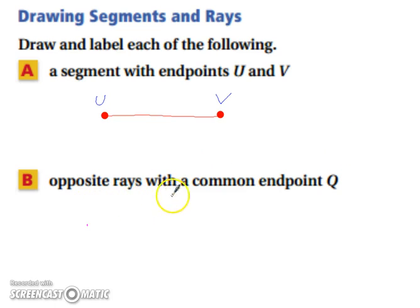Opposite rays with a common endpoint Q. Now, opposite rays form a line, but they have a common endpoint in the middle. So we have ourselves a common endpoint in the middle. And then they extend in opposite directions. Hold on, let me try that one again. There we go.